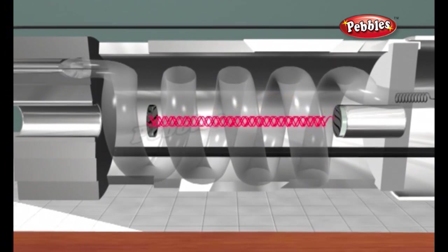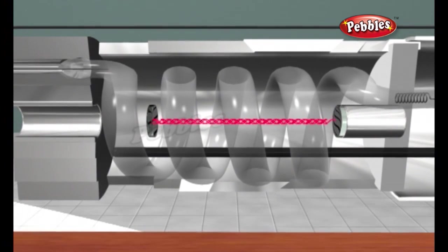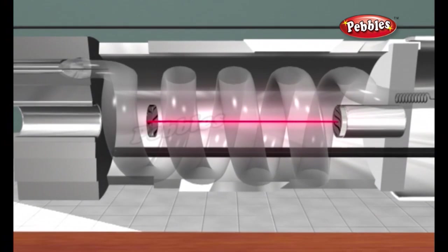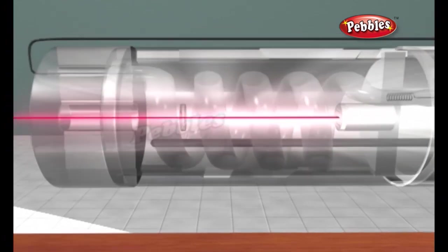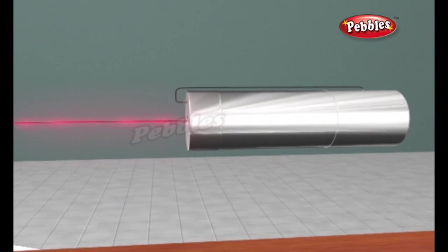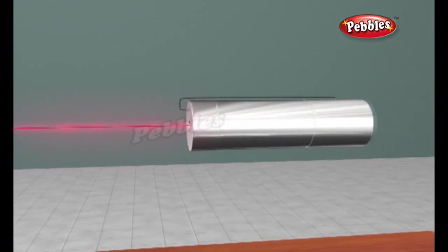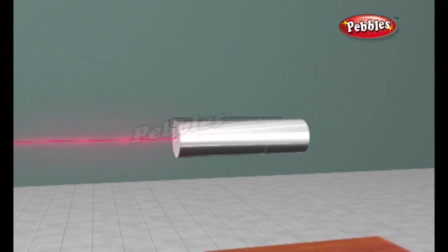Photons with a very specific wavelength and phase reflect off the mirrors to travel back and forth through the lasing medium. In the process, they stimulate other electrons to make the downward energy jump and can cause the emission of more photons of the same wavelength and phase. A cascade effect occurs and soon we have propagated many photons of the same wavelength and phase.